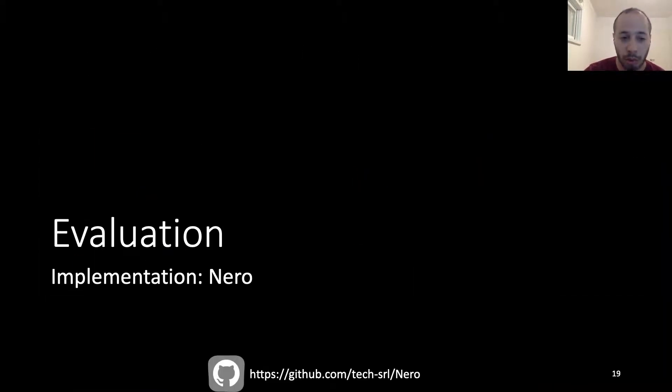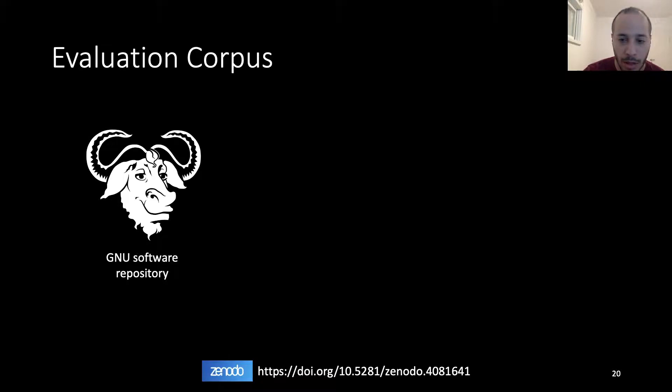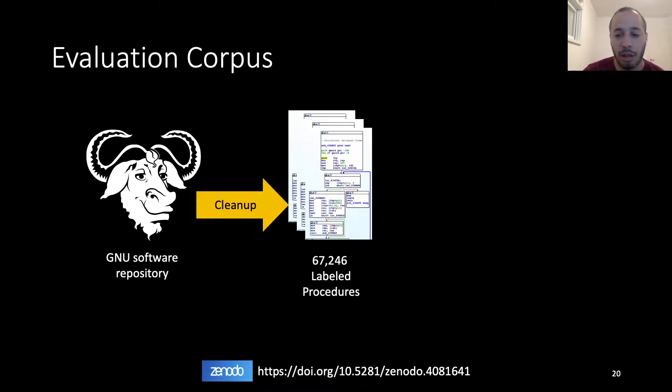Next, we will evaluate our approach. We have implemented it in a prototype we called Nero, which is available online. We built our evaluation corpus using GNU software packages from the GNU software repositories. We invested a lot of effort in cleaning them up and making sure to remove test code and any duplications.